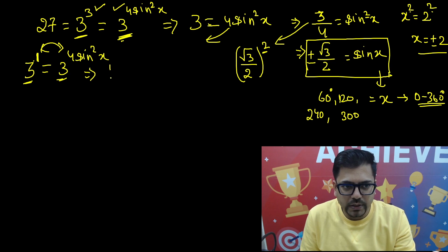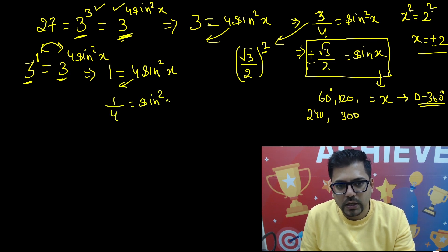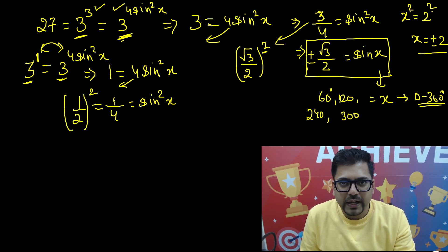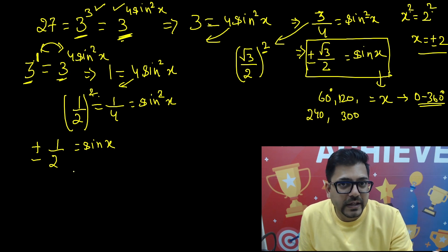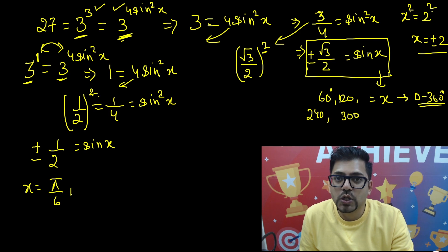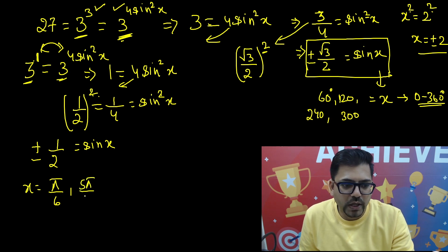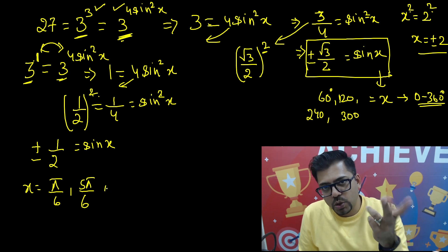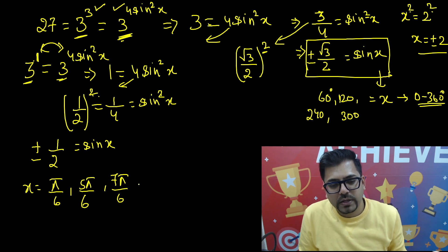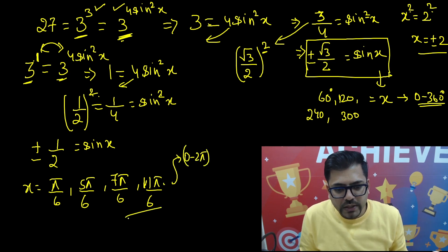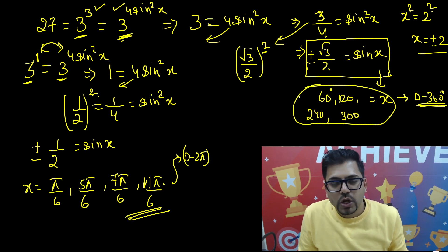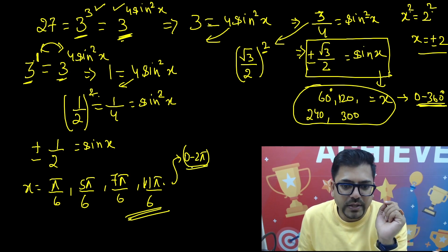Removing the square with plus-minus gives sinx equals plus or minus 1/2. This gives x equals 30° (π/6) and 150° (5π/6) for the positive case, and 210° (7π/6) and 330° (11π/6) for the negative case. So there are altogether 4 plus 4 equals 8 values of x in the range 0 to 2π. If only the first quadrant is asked, there are two values: 60° and 30°.